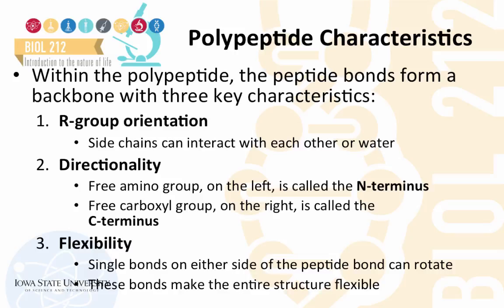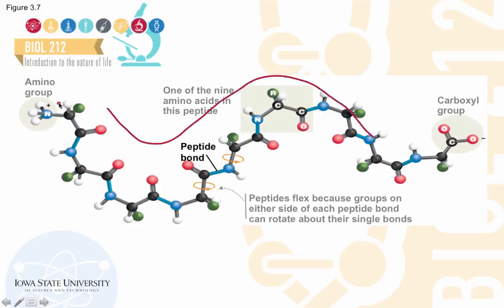The three key characteristics of polypeptide chains are: first, the side chains can interact with each other or with water — only polar side chains are chemically active. Second, directionality — the polypeptide chain starts at the N-terminus and ends at the C-terminus. Third, flexibility — the single bonds on either side of the peptide bond can rotate, making the polypeptide structure flexible. The side chains are arranged so they can react or interact with water.